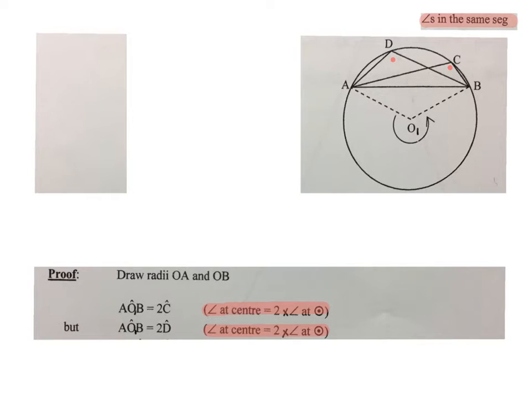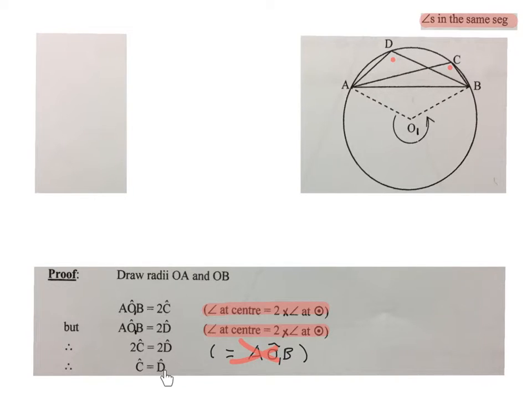Then you write also angle AOB is equal to 2D. In other words, that same angle at the bottom there is twice as big as that one there. Again, angle at center is two times angle at circumference. Then you'll say two times angle C equals two times angle D. So these two are equal. You don't have to write this reason because they're both equal to the same angle. Then you just write angle C equals angle D, dividing by two on both sides. And that is what we had to prove.